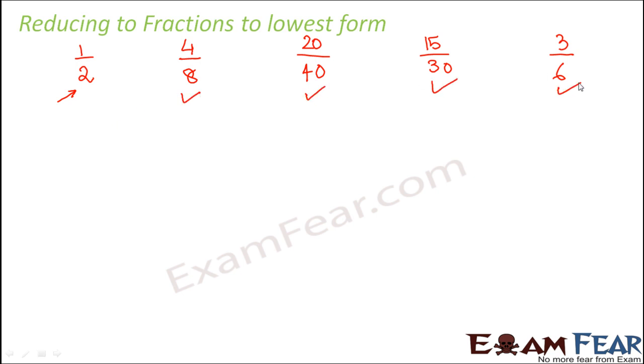So how do we reduce a fraction to its lowest form? Let's have a look. So let's look at 4 by 8. Now this is possible only when there is a common factor between the numerator and the denominator except 1.